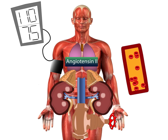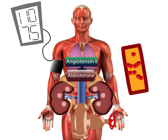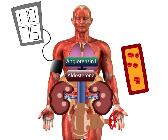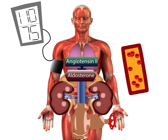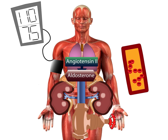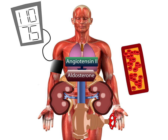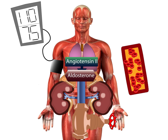Concurrently, angiotensin 2 signals the adrenal gland, located above the kidney, to secrete the hormone aldosterone. Aldosterone signals the kidney to retain sodium and water so that it stays in the blood rather than being excreted. Blood volume consequently goes up.